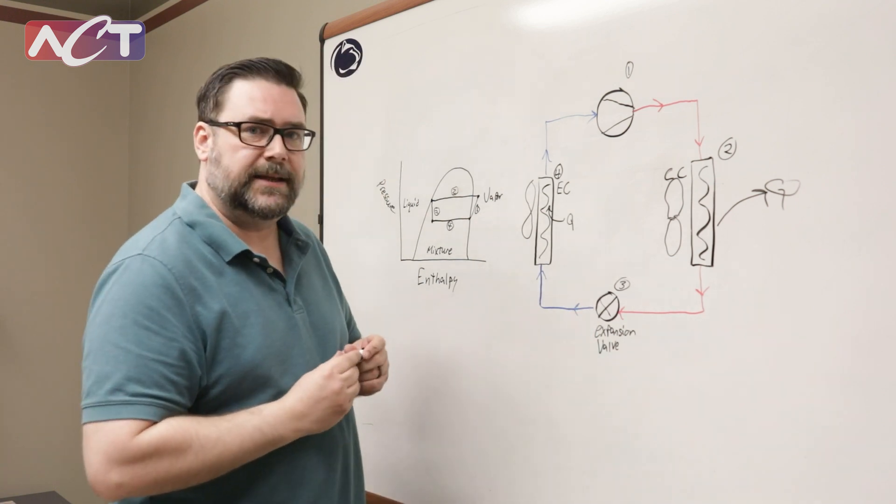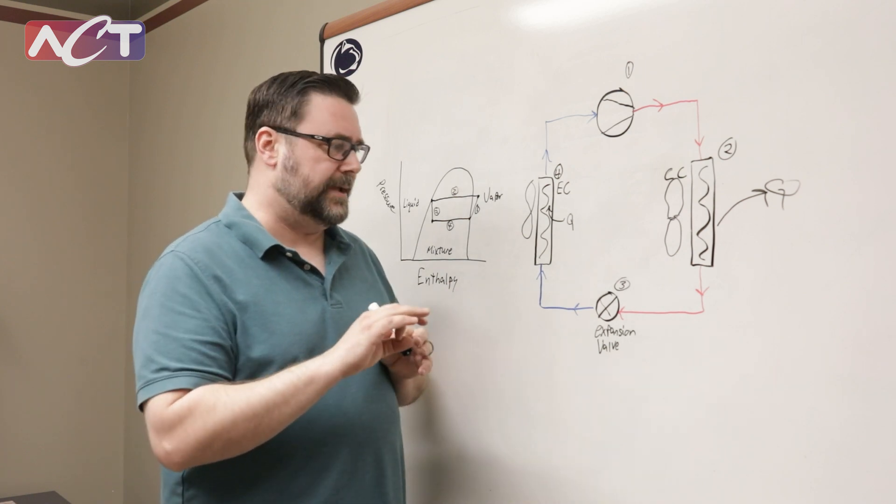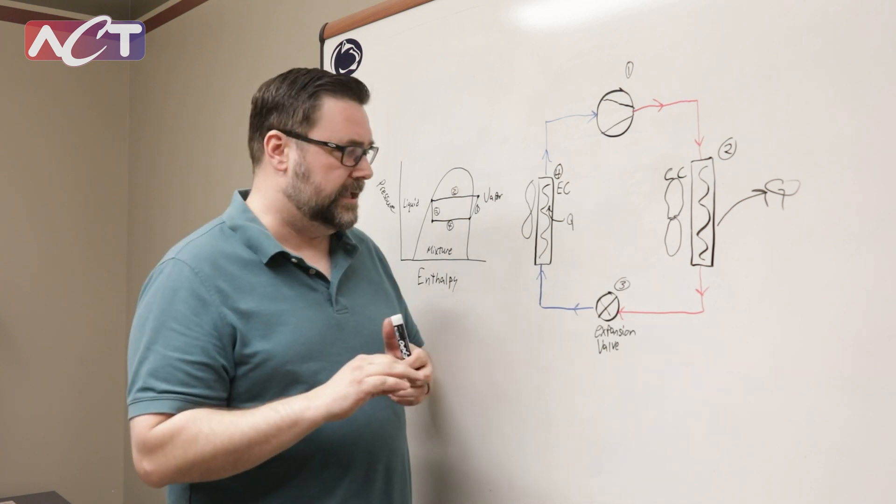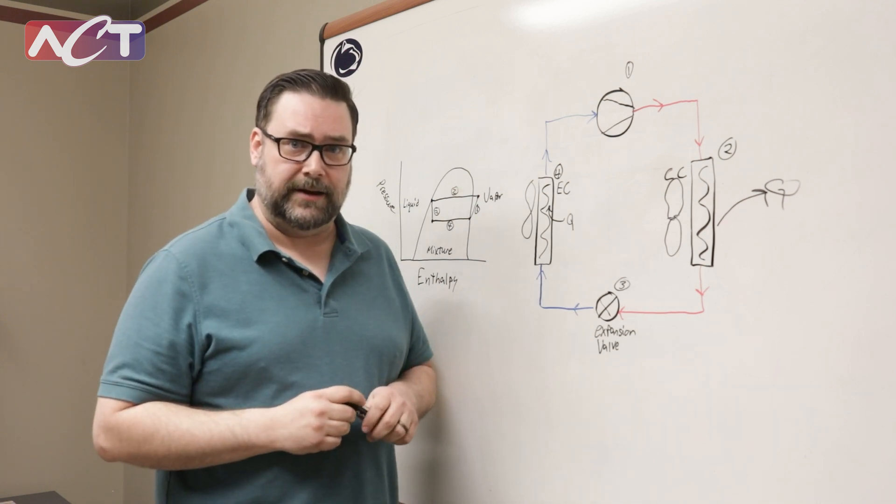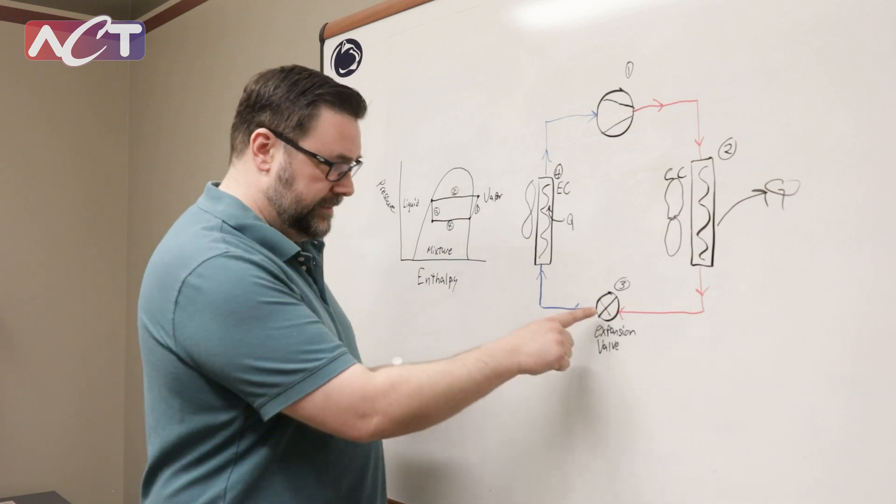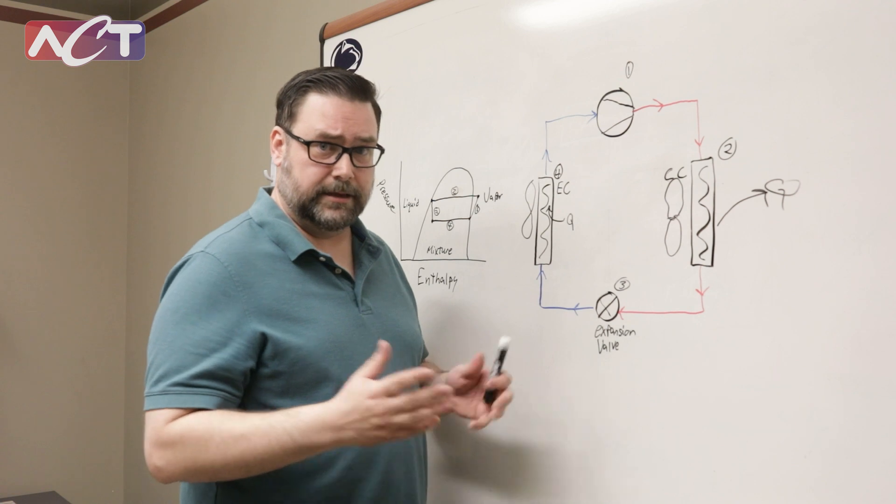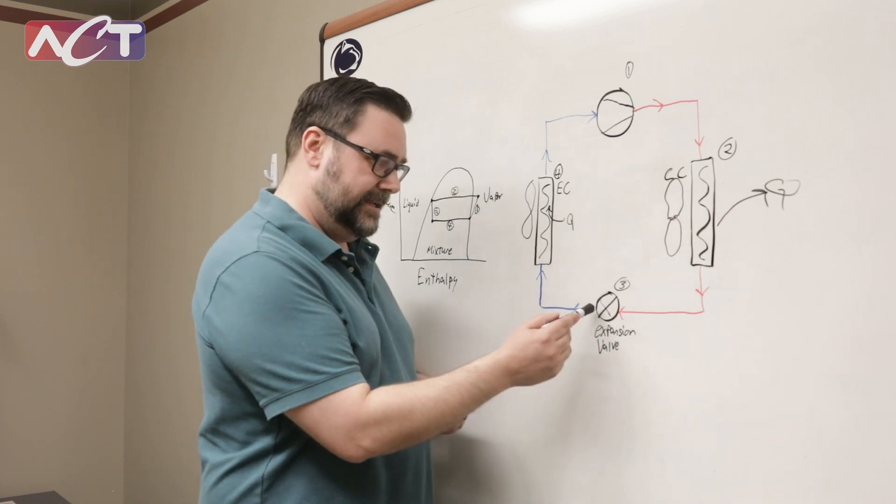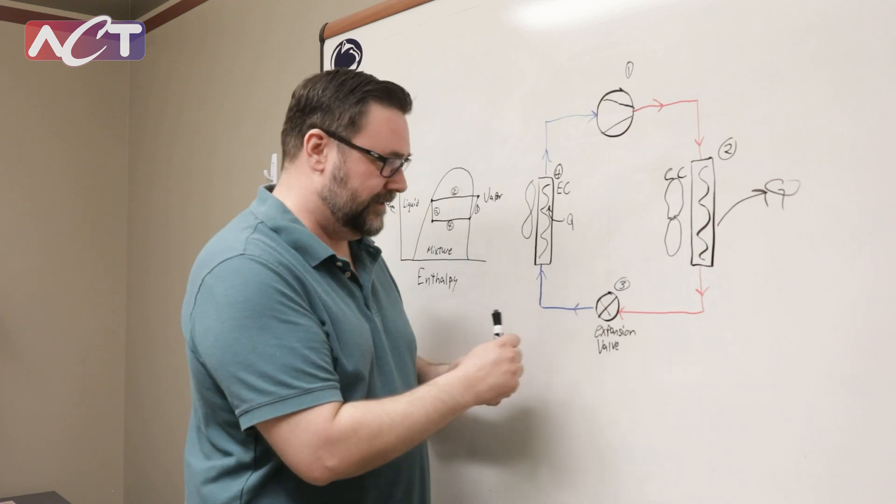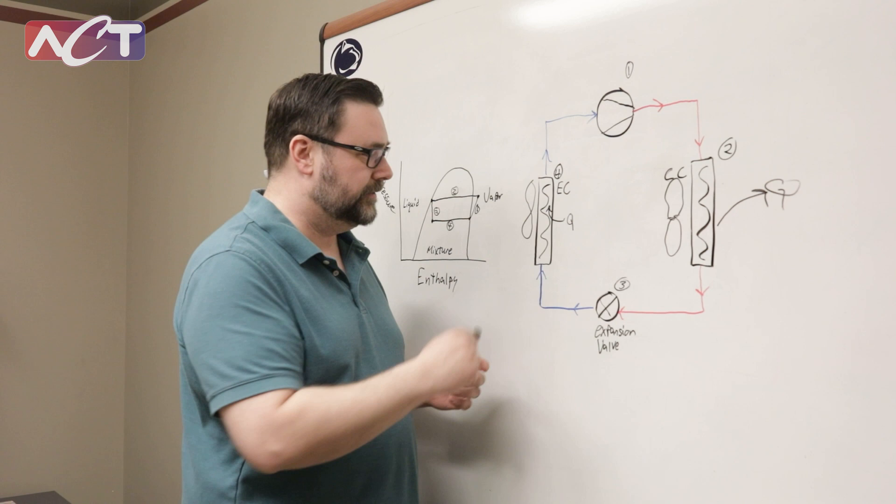So what an expansion valve does essentially is it's got an orifice and it kind of holds back the refrigerant flow. Similar to if you've ever been stuck in traffic on a highway where they have a lane closure. If you think of this is where the lane is closed, everything back here is where all the cars are waiting trying to get through and as you get through this you kind of hit that sweet spot just after and everything kind of opens up and you got space between the cars and everybody's flowing and moving great.